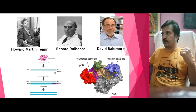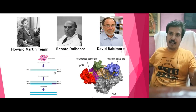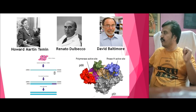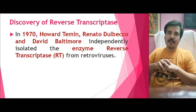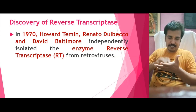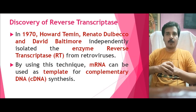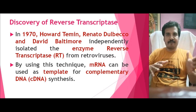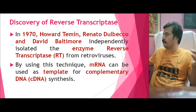A tremendous contribution also came from addressing the question: if we have RNA instead of DNA, can we convert RNA into DNA? In 1970, Howard Temin, Renato Dulbecco, and David Baltimore separately discovered an enzyme called reverse transcriptase from retroviruses. A retrovirus carries RNA as its genetic material; when it infects a cell, the RNA gets converted into DNA by reverse transcriptase, which then integrates into the host cell. This discovery allowed us to convert mRNA into cDNA, and that DNA can then be used as a gene for cloning.